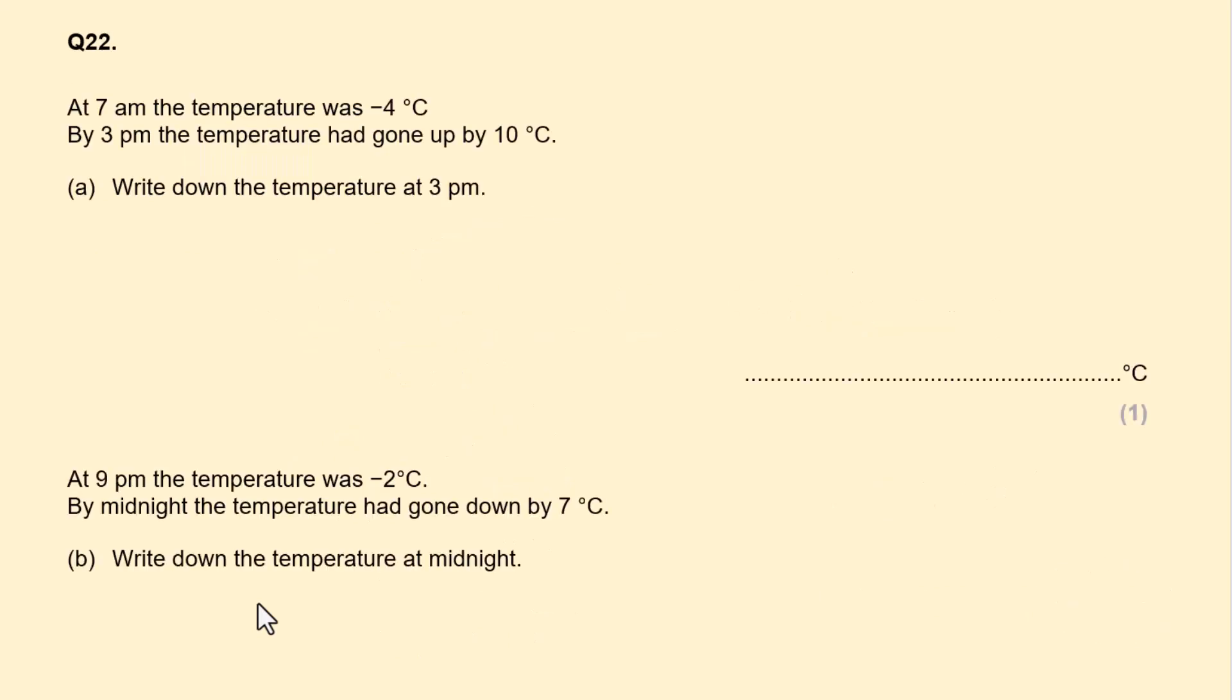Question number 22. At 7pm, the temperature was minus 4 degrees Celsius. By 3pm, the temperature had gone up by 10 degrees, write down the temperature at 3pm. So minus 4, and had gone up by 10 degrees Celsius. That would be temperature of 6 degrees Celsius. So until it's 6.